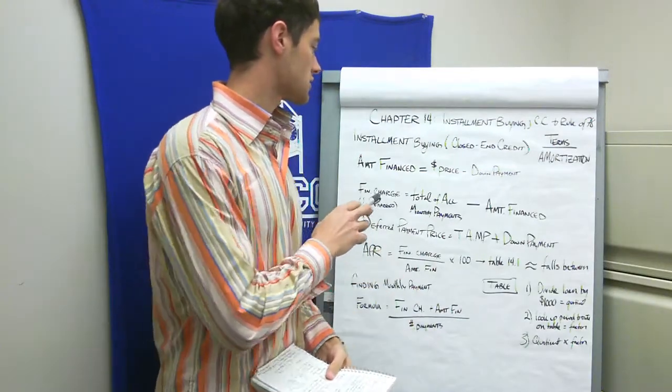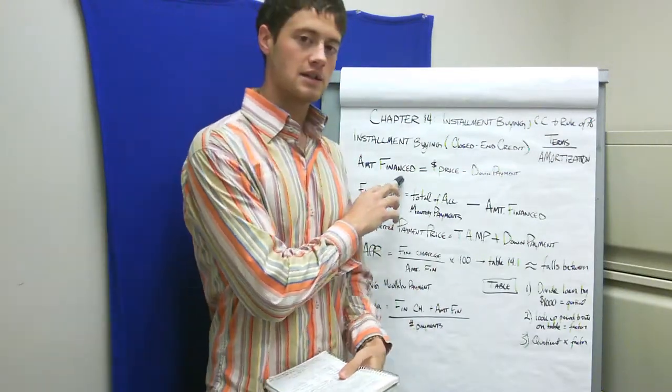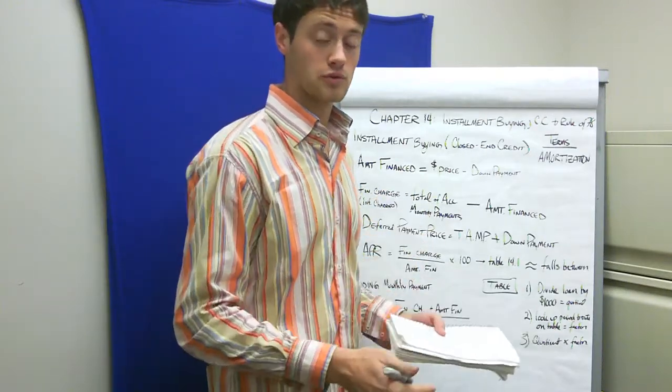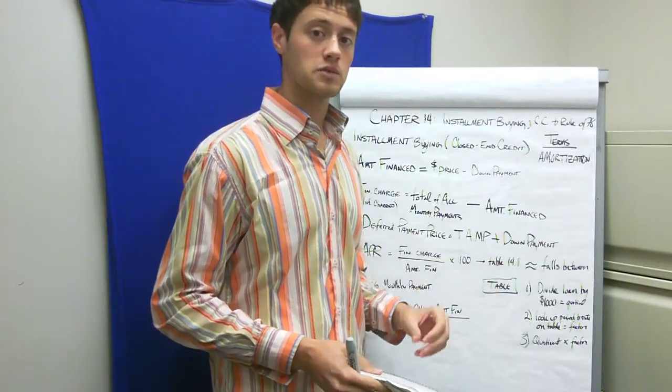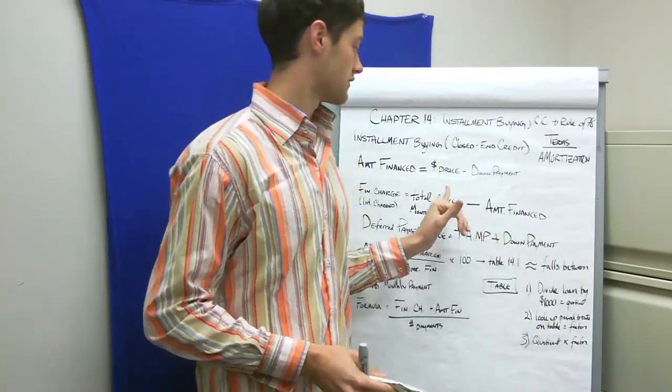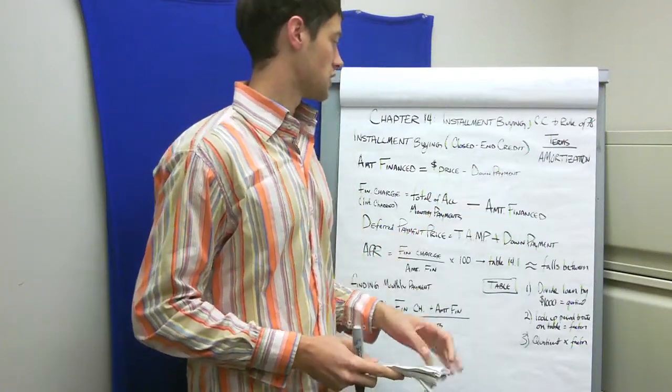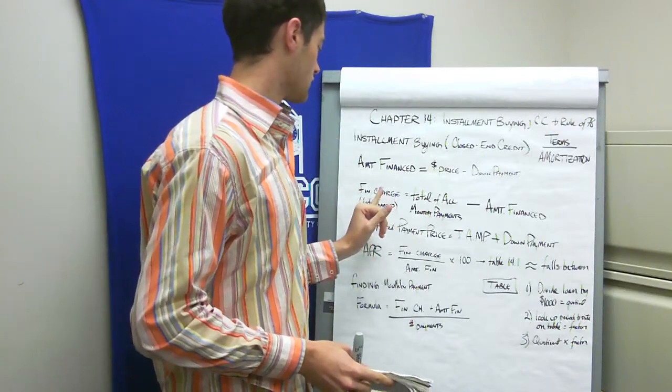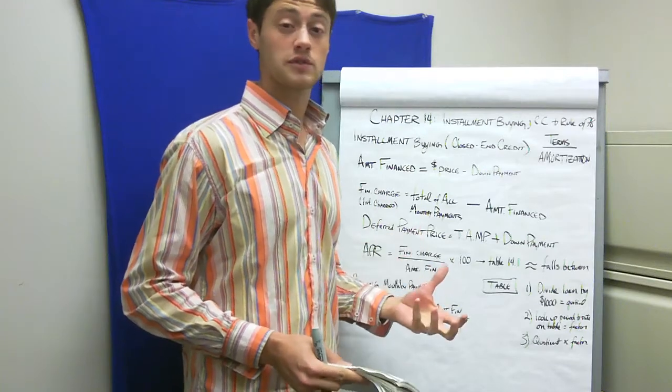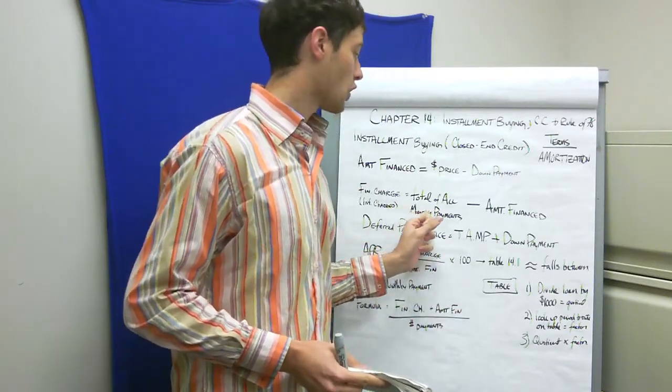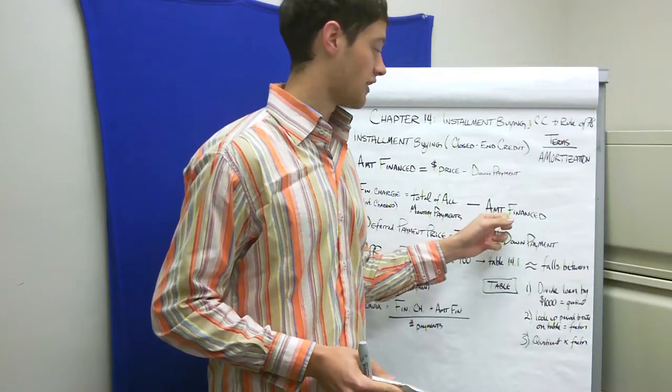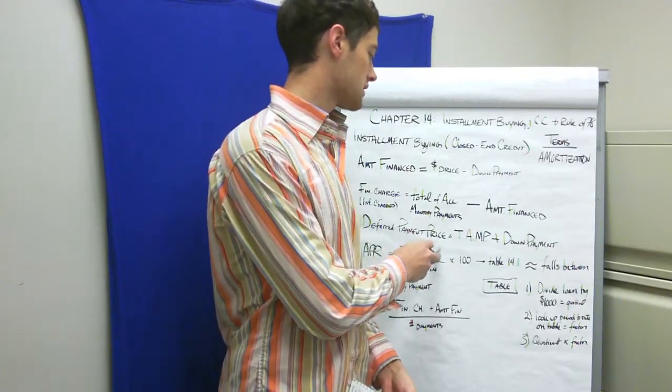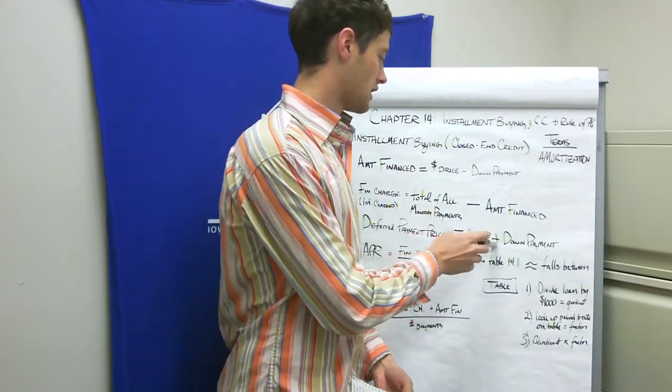Some key things to pay attention to: your amount financed is your cash price minus your down payment. So if you go to the Honda dealer and pay a down payment but finance the rest, you take the cash price minus how much you actually pay to get the amount financed. The finance charge is the same as your interest charged, which is the total of all monthly payments minus the amount financed. We'll go through these practically.